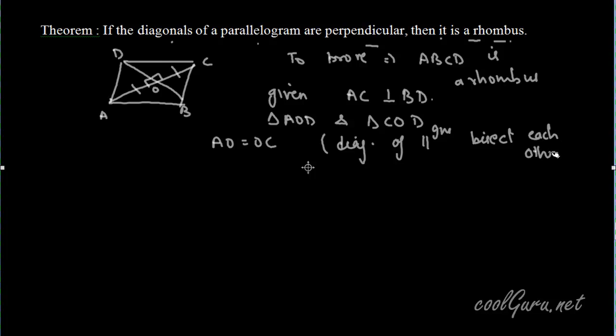And also it is given that angle AOD is equal to angle COD is equal to 90 degrees. It is given that diagonals are perpendicular to each other. And also this side OD is equal to OD - this is common. Therefore by SAS, triangle AOD is congruent to triangle COD.